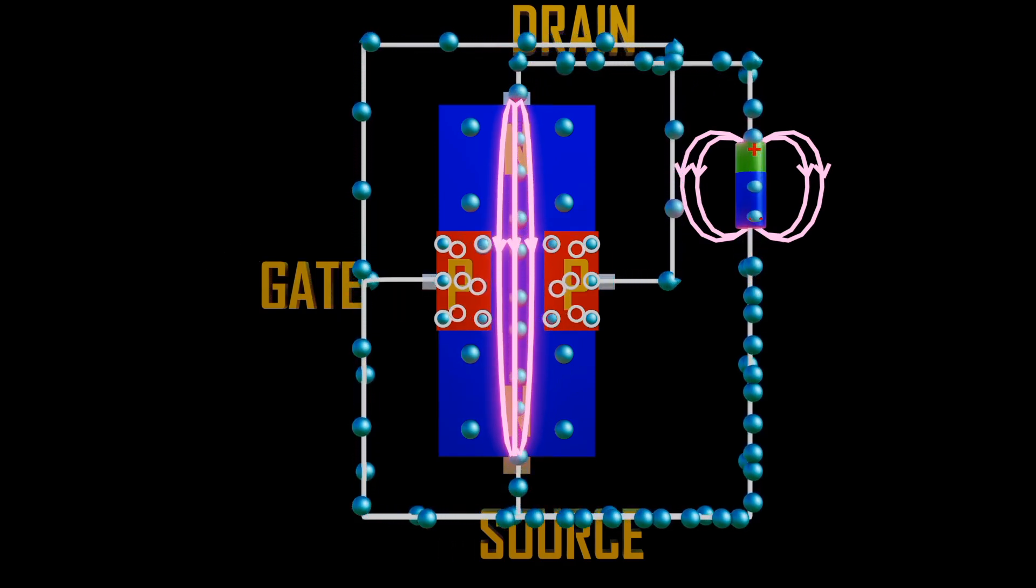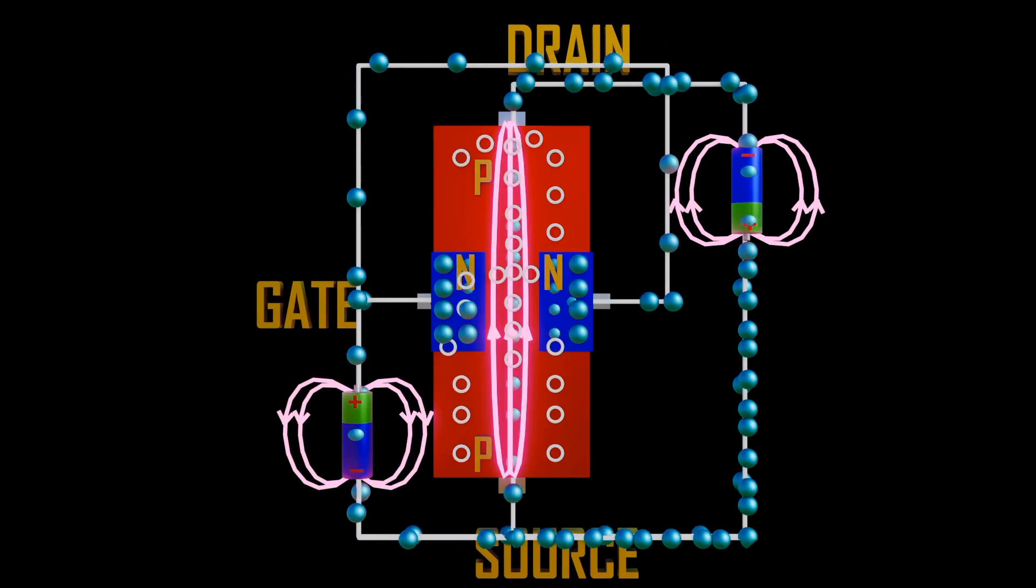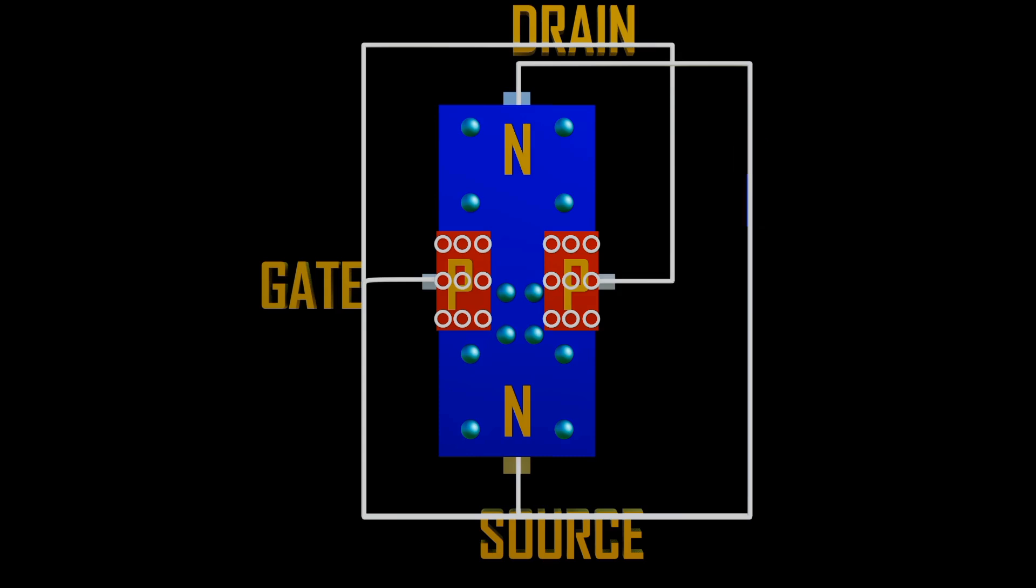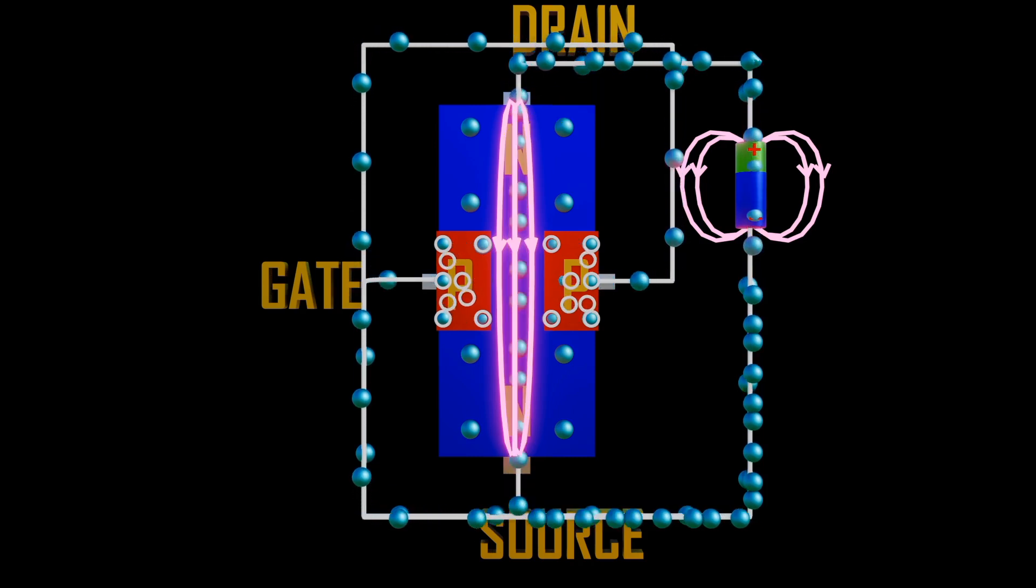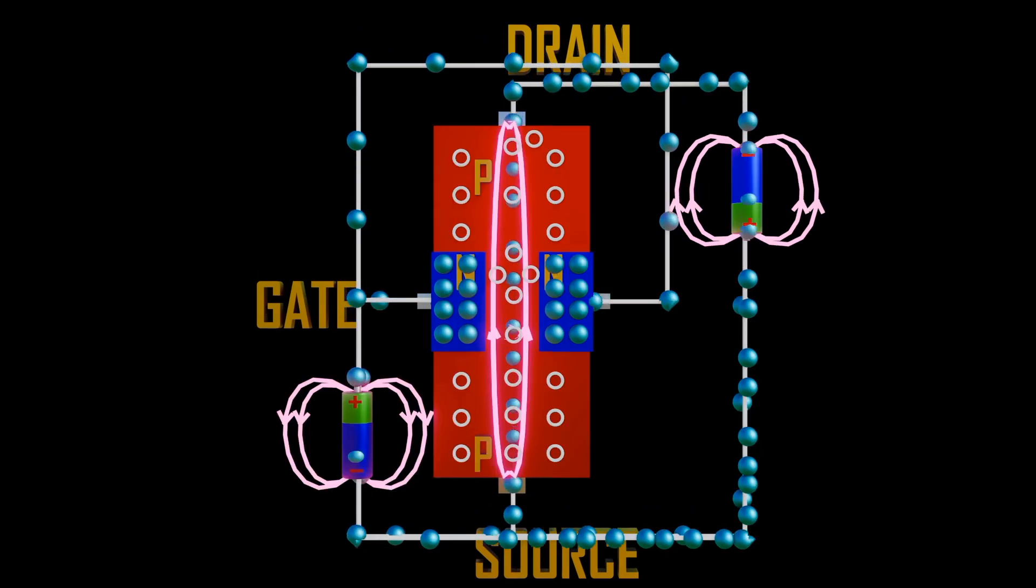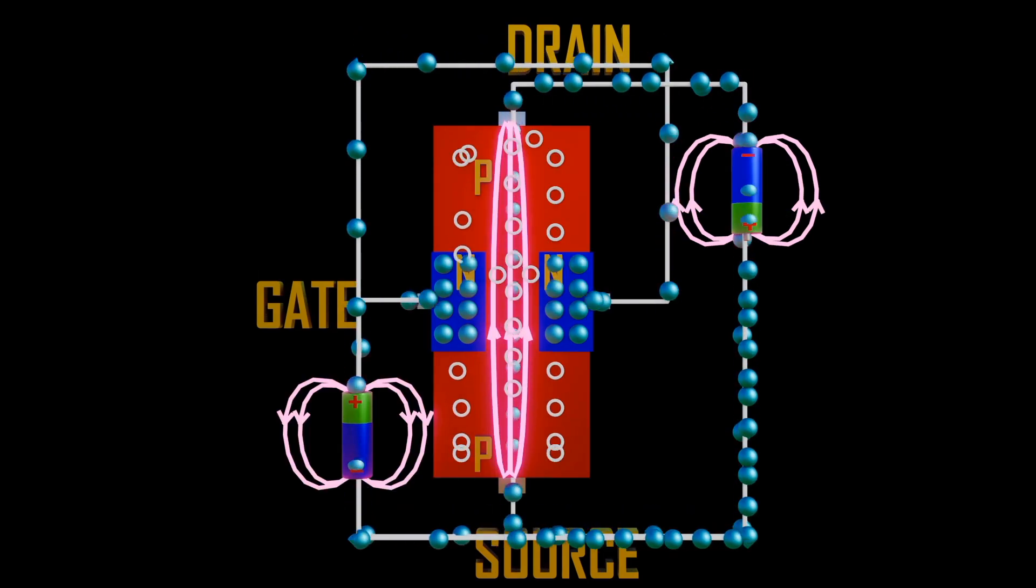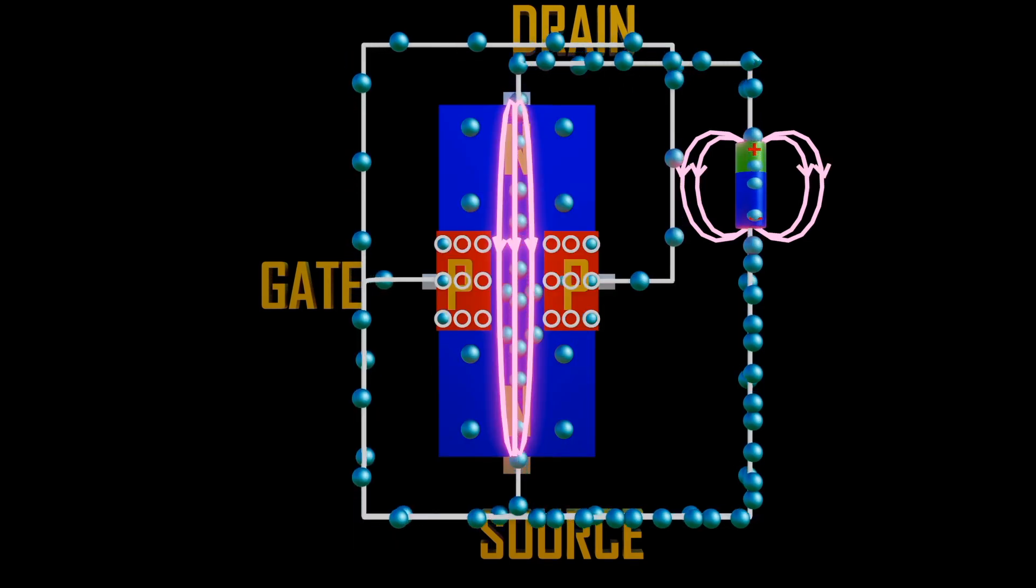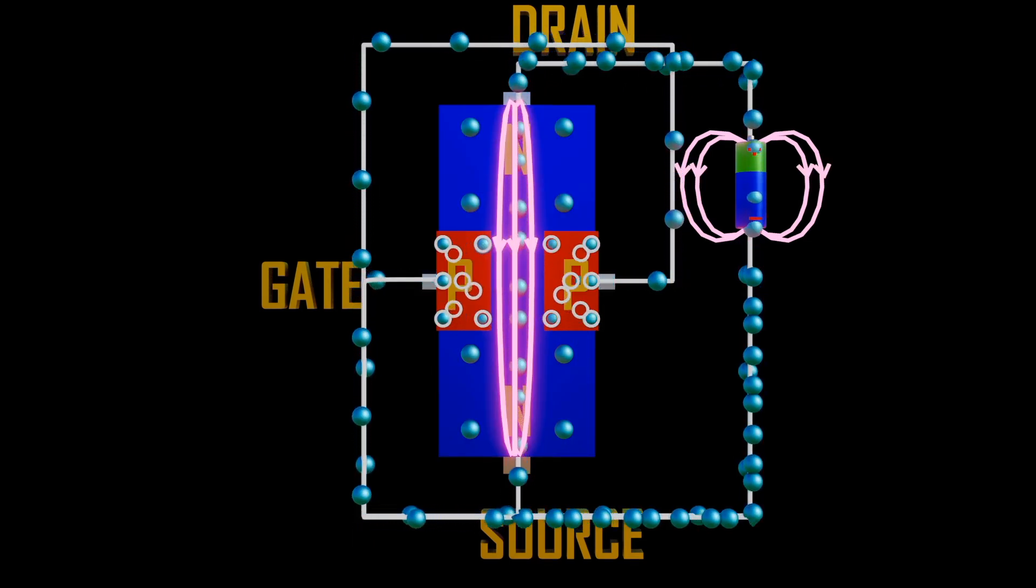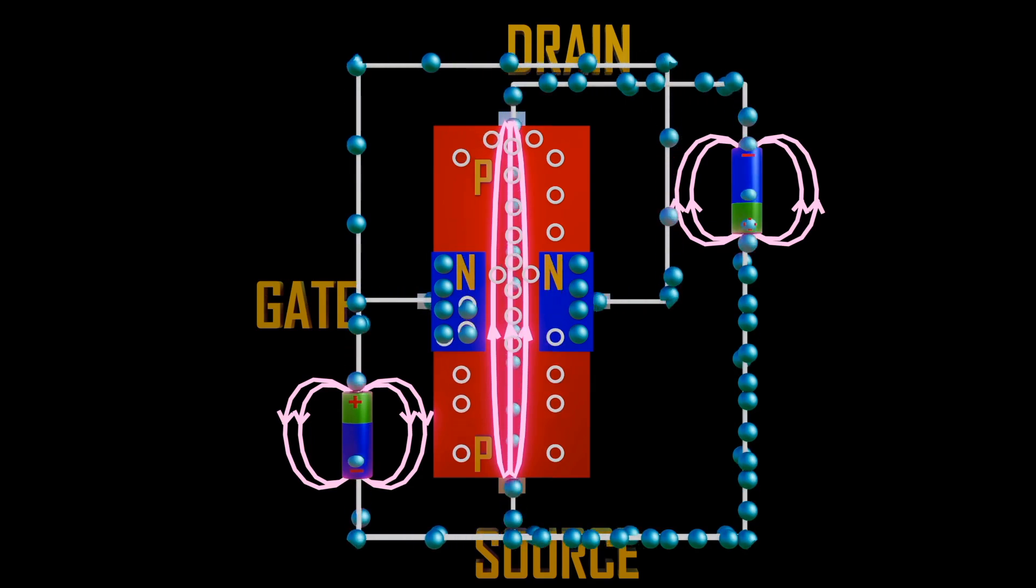JFET can operate either in N-channel or P-channel. In N-channel, electrons enter the channel through the terminal called source and leave through the drain terminal. N-channel has electrons as majority carriers, while P-channel has holes as majority carriers. The only difference between N and P-channels is that in N-channel current is carried by electrons, while P-channel current is carried by holes.